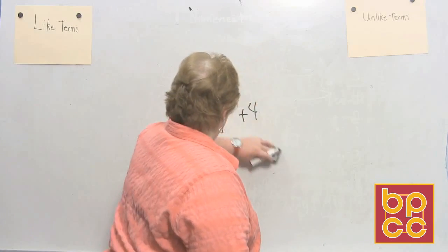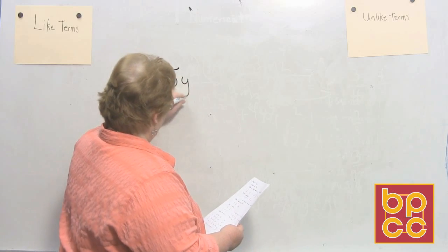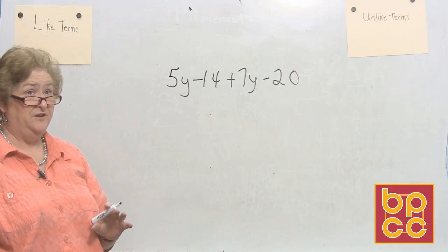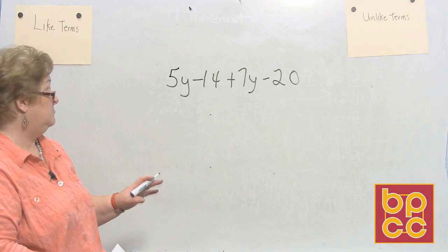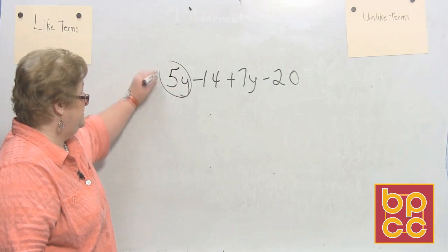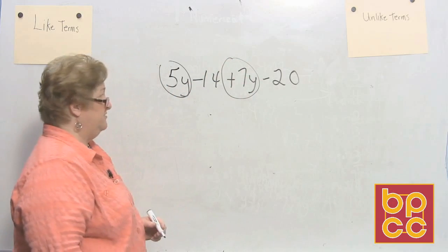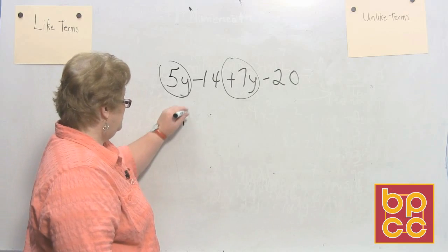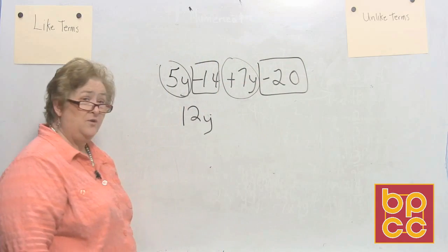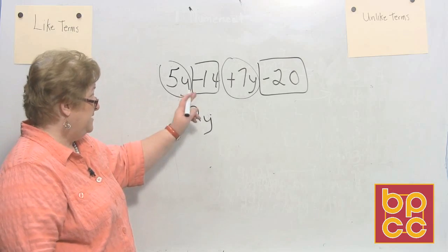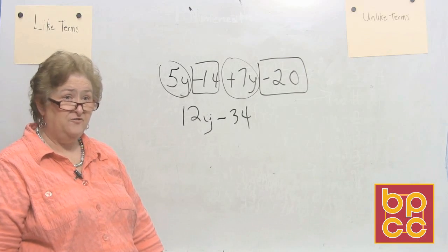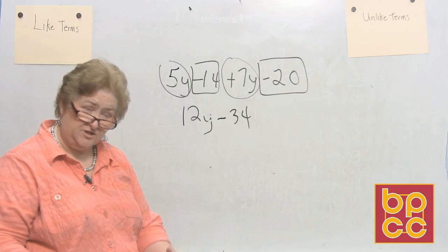Let's try: 5y minus 14 plus 7y minus 20. We've got two different types of terms — numbers and y's. Grab all the y's first: positive 5y and positive 7y give us 12y. Then the numbers: negative 14 and more negative 20 — negative and more negative gives a negative 34. So simplified: 12y minus 34.